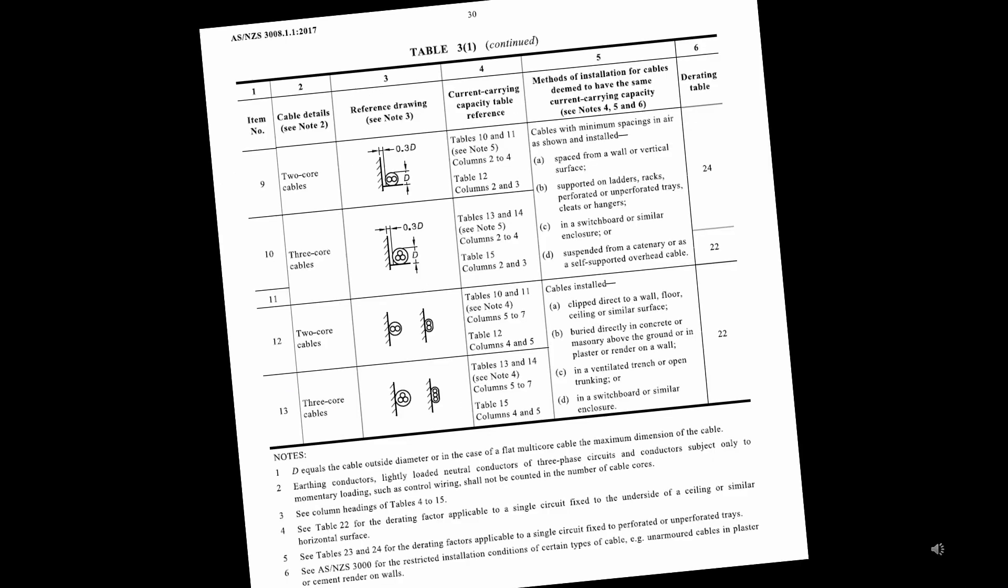Table 3 has an explanation of what all the symbols mean in the rest of the current carrying capacity tables. Here, on Table 3, brackets 1, you will find this symbol, which means all of these scenarios down here.